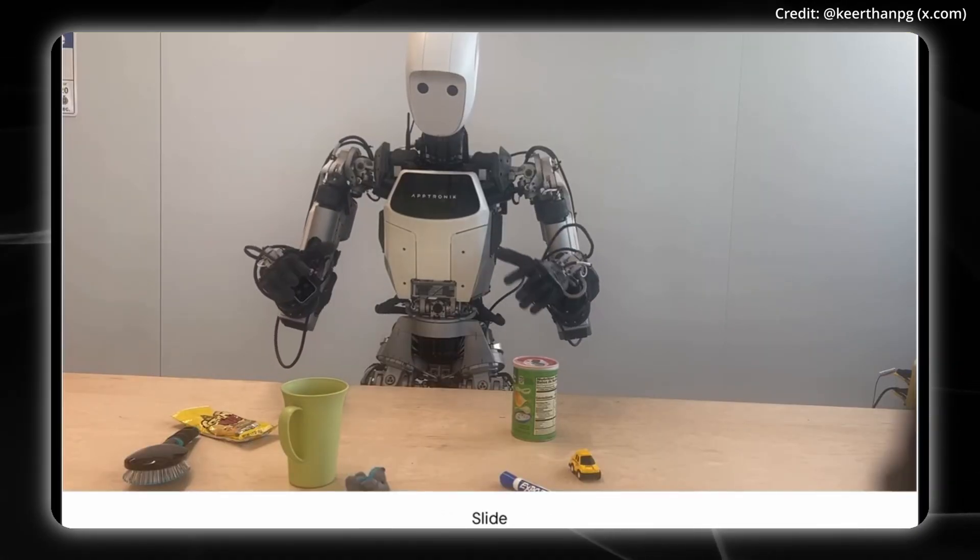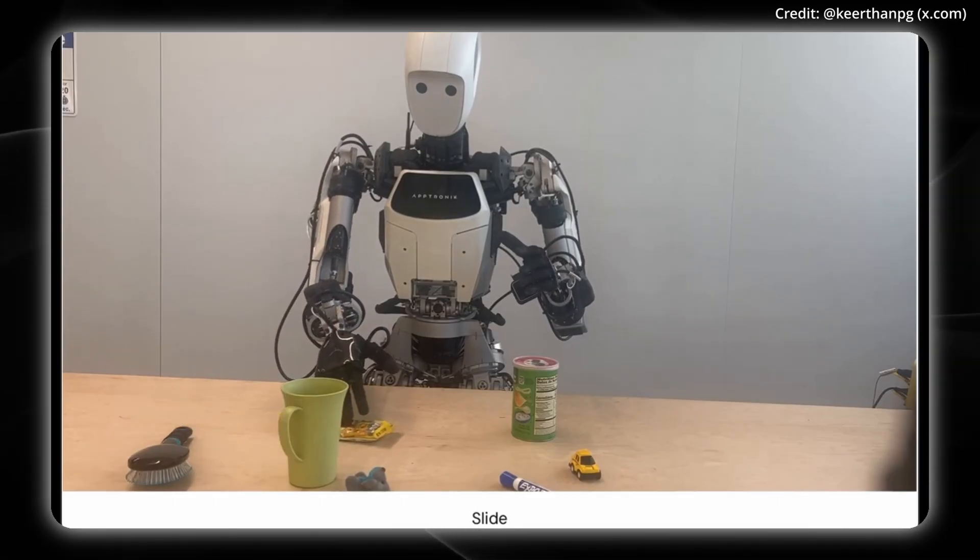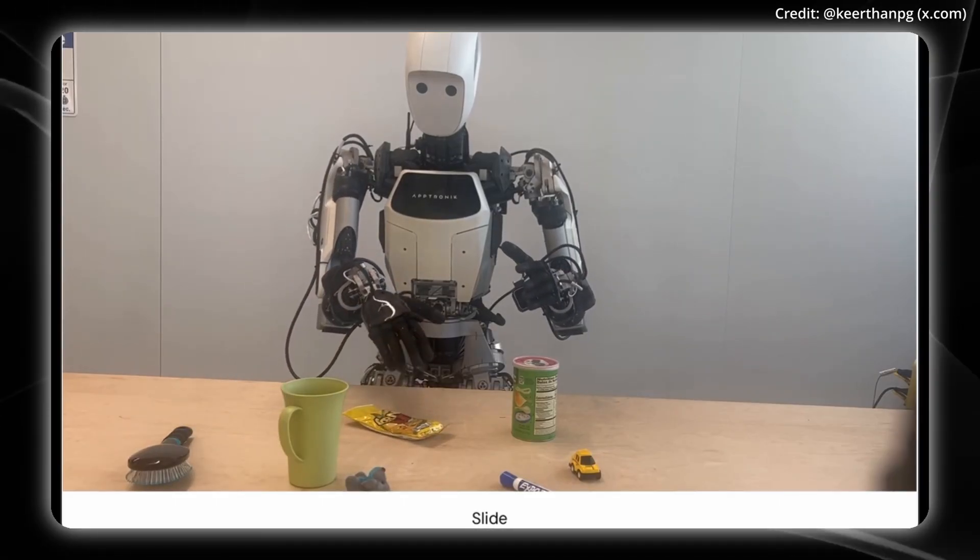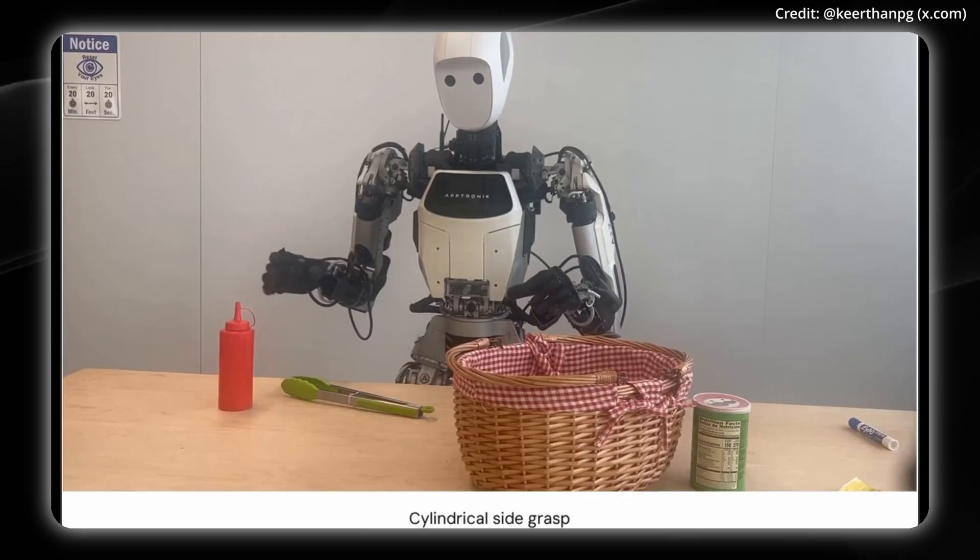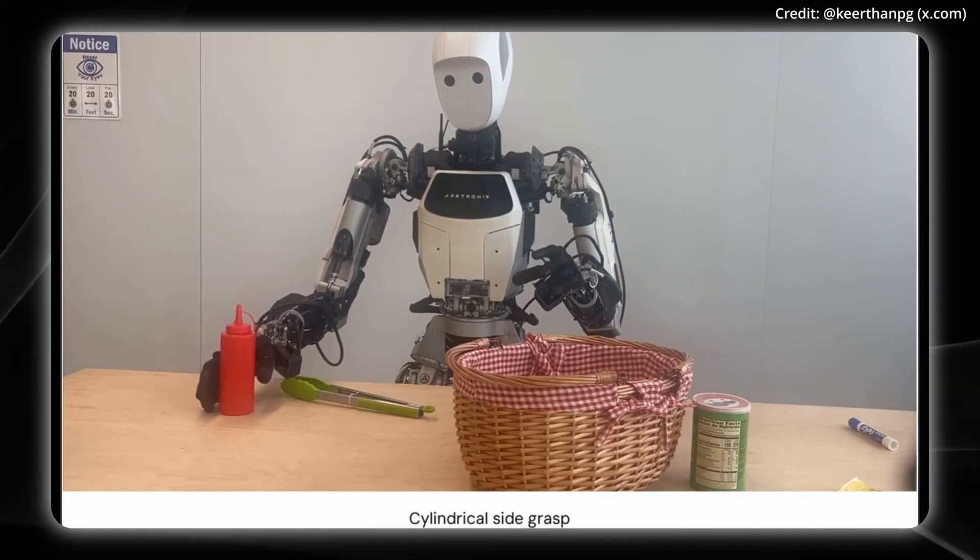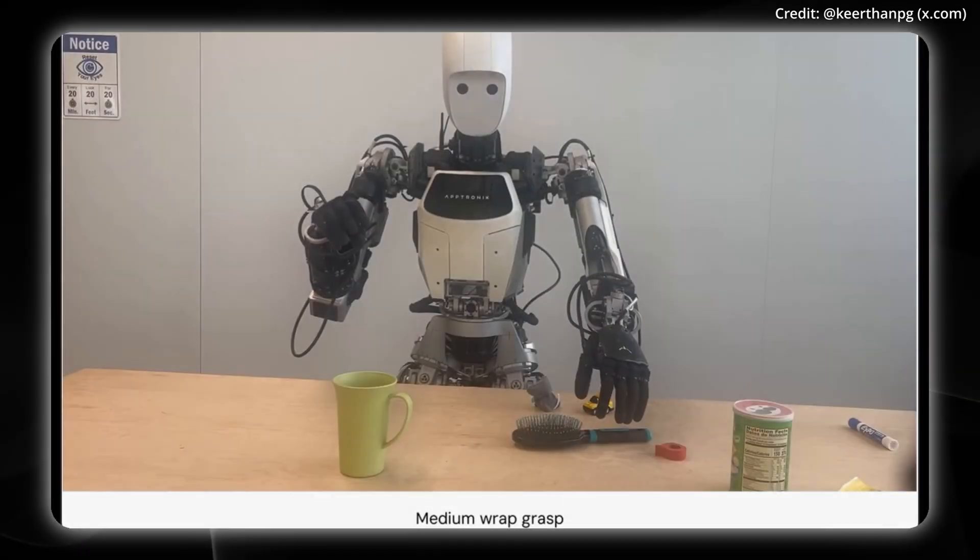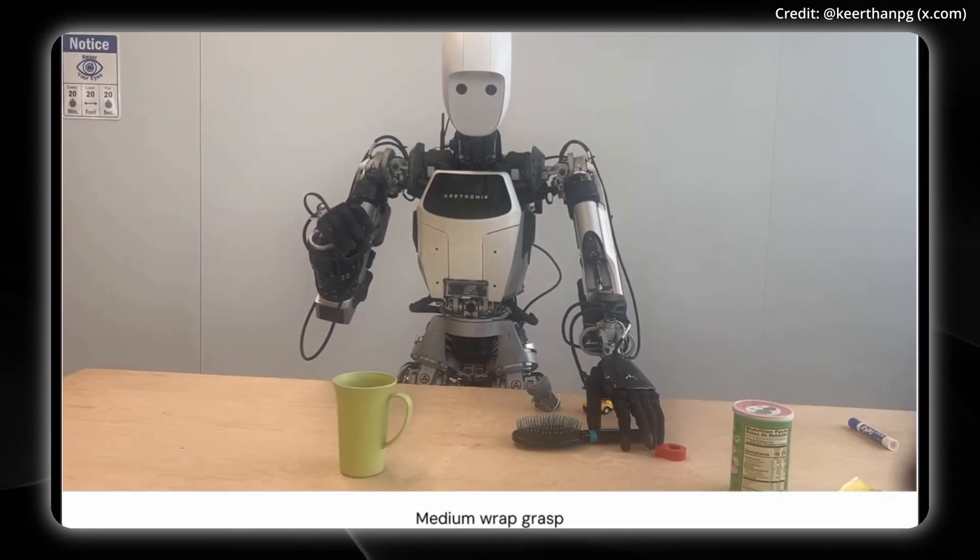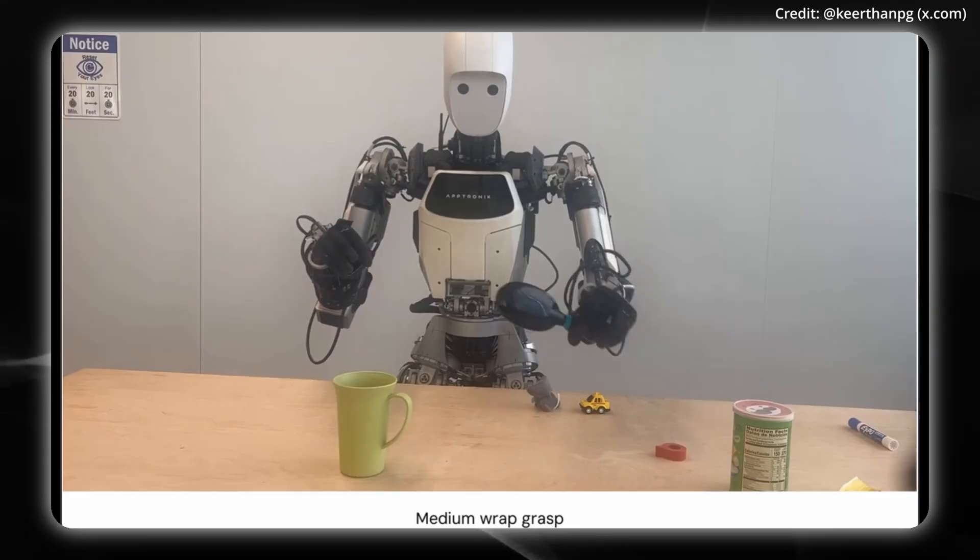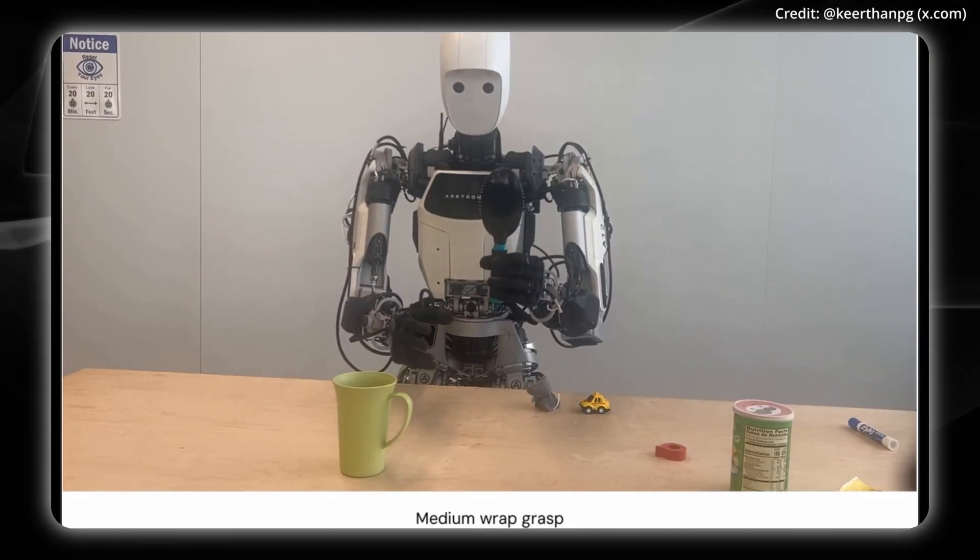Next here, it manipulates a slide by not pressing too hard, just pushing it over. It's actually much harder than you would think it would be for a robot system to figure this out emergently. Here it grasps a cylindrical object. And here's a medium grasp using not all of its fingers, it looks like, just three, which is quite an awkward grip, but it does it without a problem here.